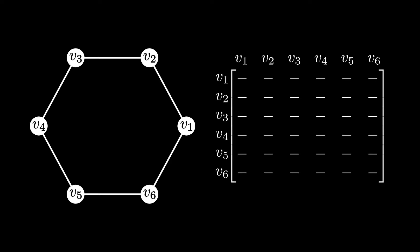And now in each entry, we're going to put a 0 if the two vertices are not adjacent, and a 1 if they are. So if we start out with the very first entry, then we ask the question, is v1 adjacent to itself? The answer's no, because we don't have any self loops, so we input a 0.